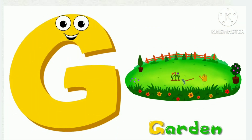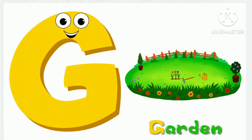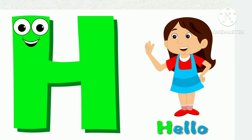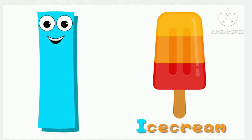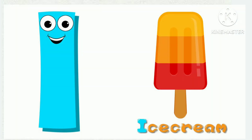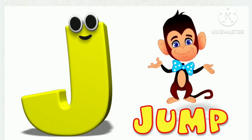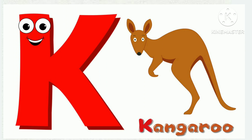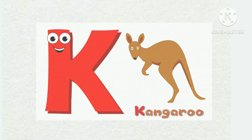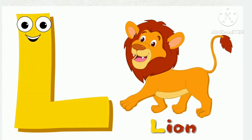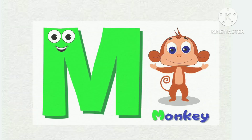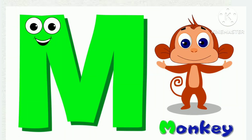G for Garden, H for Hello, I for Ice Cream, G for Jump, K for Kangaroo, L for Lion.